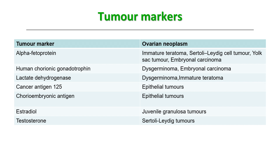Human chorionic gonadotrophin (HCG) is raised in dysgerminoma and embryonal carcinoma. LDH (lactate dehydrogenase) is raised in dysgerminoma and immature teratoma. Cancer antigen 125 (CA-125) is raised in epithelial tumors — though many benign conditions can cause a slight rise, it is specifically elevated to a greater level in epithelial tumors. CEA (carcinoembryonic antigen) is also raised in epithelial tumors.